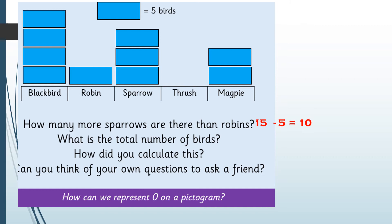Next question: what is the total number of birds? For that you need to add up all of the birds in the pictogram. I'm going to break it down by bird: blackbirds have four lots of five which makes 20; robins have five; sparrows have three lots of five which makes 15; there's nothing for thrush; and magpies have two lots of five which makes 10. Altogether that makes 50. You might have counted 5, 10, 15, 20, 25 all the way through, or counted up the number of blocks using your five times tables.